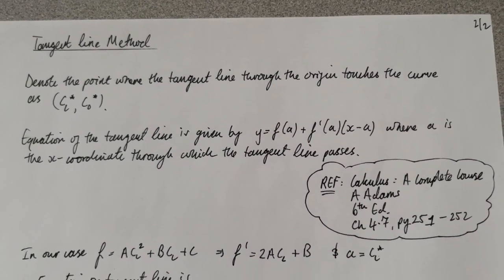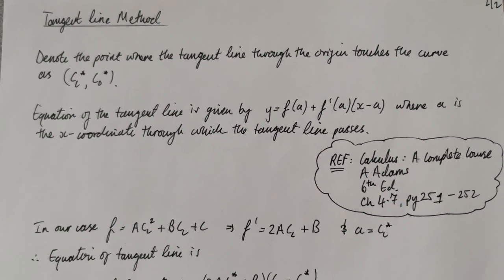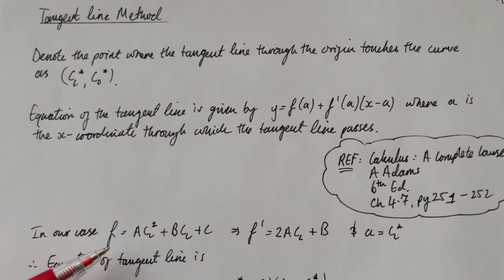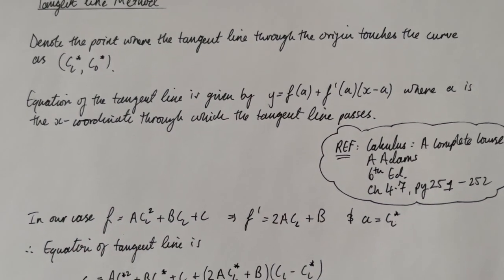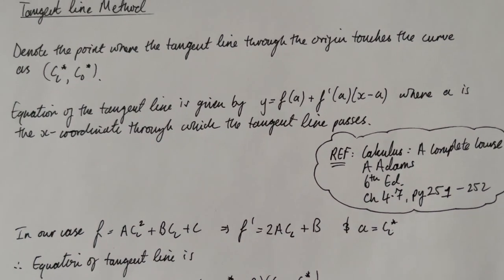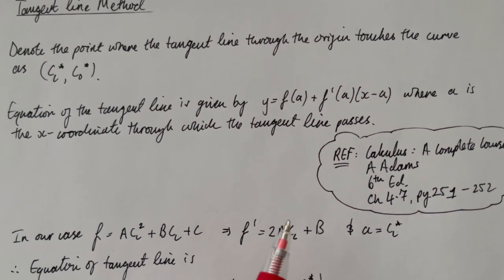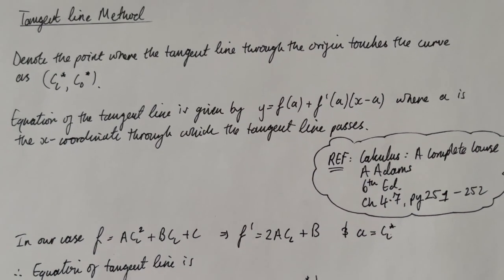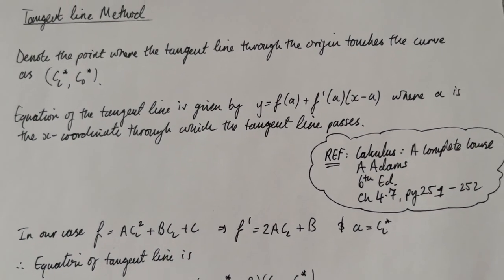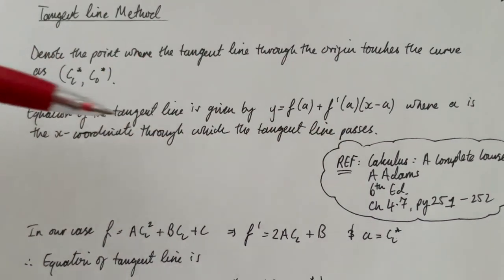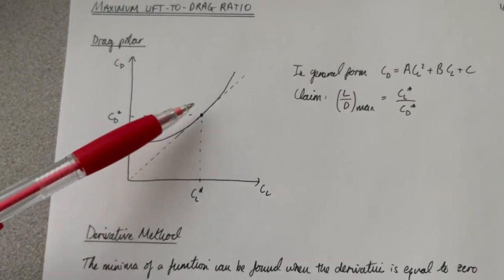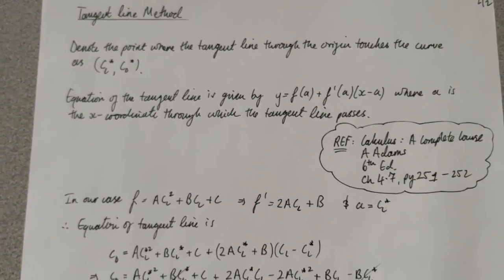Let's rewrite the tangent line equation in our notation. Our function is the drag polar in general form: ACL² + BCL + C. The derivative f' was found earlier during the derivative method. In our case, a — the x-coordinate through which the tangent line passes — is denoted CL*, the point at which the tangent touches the curve.